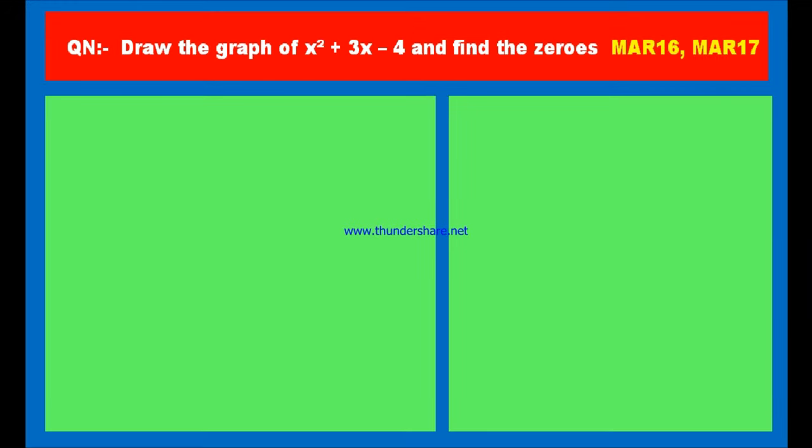Another question: Draw the graph of x squared plus 3x minus 4 and find the zeros. This question appeared in March 2016 and March 2017. Here is the solution. Let us consider the given quadratic polynomial as P of x. P of x is equal to x squared plus 3x minus 4.